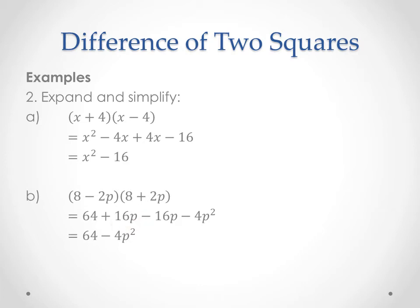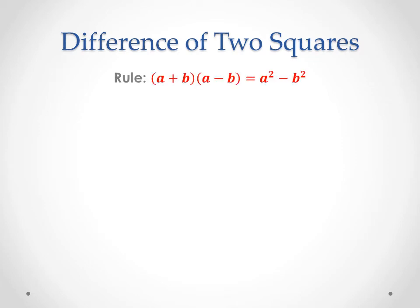So we end up with x squared minus 16. The same thing is happening in the second example too — those two brackets are identical except for the middle sign, so again the two middle terms cancel out. That's why it's called the difference of two squares: the final answer has a squared term x squared, and the other squared term is 4 squared which is 16, and it's the difference — subtraction — between the two. So the rule is: a plus b times a minus b equals a squared minus b squared.